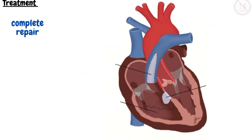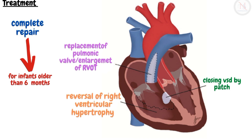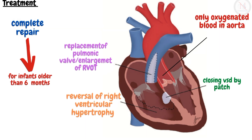The complete repair is reserved for infants older than six months. The surgery involves widening of the pulmonary artery; the pulmonary valve is widened or replaced and the passage from the right ventricle is enlarged, improving blood flow to the lungs and oxygenation. It also involves closing the VSD using a patch, which prevents mixing of oxygenated and unoxygenated blood. Fixing these two defects — pulmonic stenosis and VSD — also resolves the other two defects, as the right ventricle no longer has to work harder and right ventricular hypertrophy is reversed.